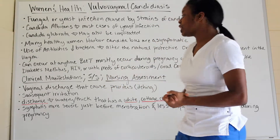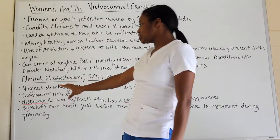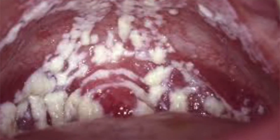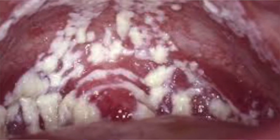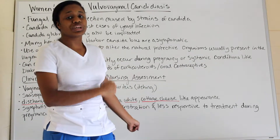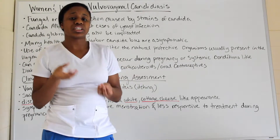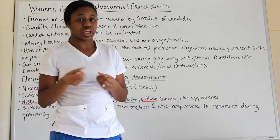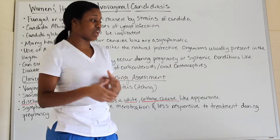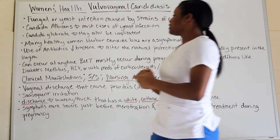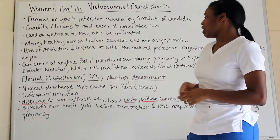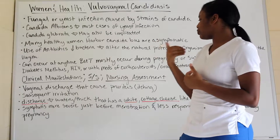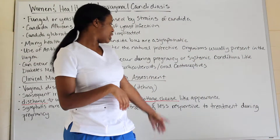The vaginal discharge can be watery or thick, but the main thing to remember is that it has a white cottage cheese-like appearance. Yes, other conditions can cause vaginal discharge, but this white cottage cheese-like consistency or texture is what makes it stand out. Symptoms are going to be more severe just before menstruation.